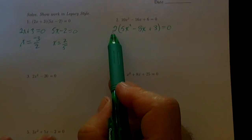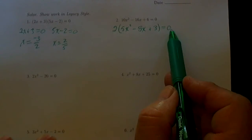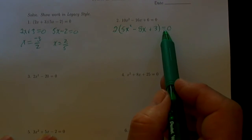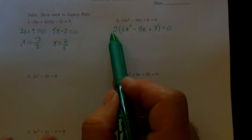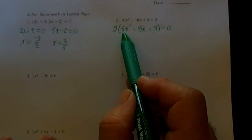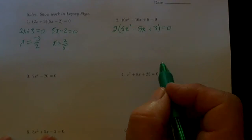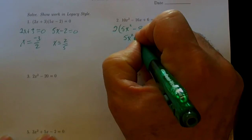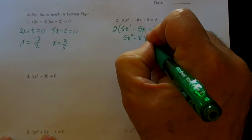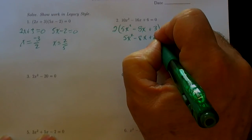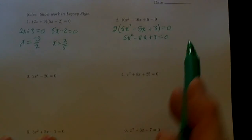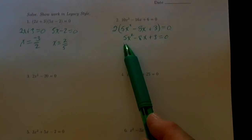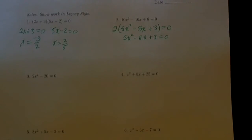Again we have the zero product property — two things multiplying to give us zero. The only way that can happen is for one of them to be zero. Since 2 is not zero, the other factor must be zero: 5x squared minus 8x plus 3 equals zero. We can reach that same conclusion by dividing both sides of the equation by 2.